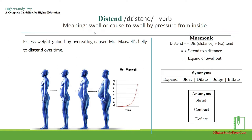Distend — it's a verb which means swell or caused to swell by pressure from inside. For example, excess weight gained by over-eating caused Mr. Maxwell's belly to distend over time. Mnemonic: for remembering the word distend, we can break it as 'dis,' which can be similar to distance, and 'tend' or 'extend,' which means extend to a distance or expand or swell out. Synonyms can be expand, bloat, dilate, bulge, inflate. Whereas some antonyms can be shrink, contract, deflate.